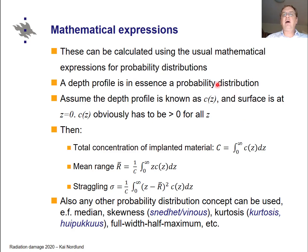So these are all relatively simple concepts but important to know. And as already alluded to, this can be calculated with basic statistics and mathematics. So if the depth profile is a function of the depth concentration as a function of z, denoted c of z, where the surface is placed at z equals zero, and this concentration has to be larger than or equal to zero for all types. With this definition one can get the total concentration, the mean range, and the straggling of these quantities.